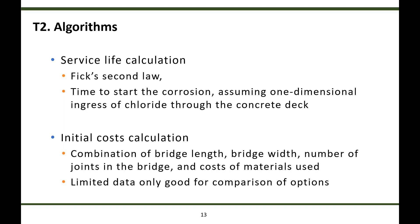The initial cost is calculated using a combination of bridge length, bridge width, number of joints in the bridge, and the cost of materials used. The user can input the cost for materials or use suggested values available in the ABC UTC guide. Each closure joint has different dimensions, which will vary the initial cost. If the user does not provide input for any of the materials, the tool's suggested values will be used. The cost calculations are based on limited data, which is only good for comparing options — users are advised to use their own values.